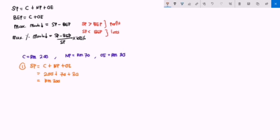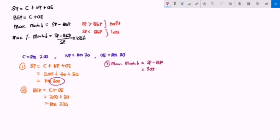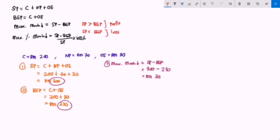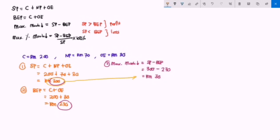The break-even price is given by cost plus operating expenses: RM 200 plus RM 30, so BEP equals RM 230. For the maximum markdown, the formula is SP minus BEP: 300 minus 230 equals RM 70. This means from a selling price of RM 300, we can mark down by a maximum of RM 70 without incurring any loss, giving a new price of RM 230, which is the break-even price.